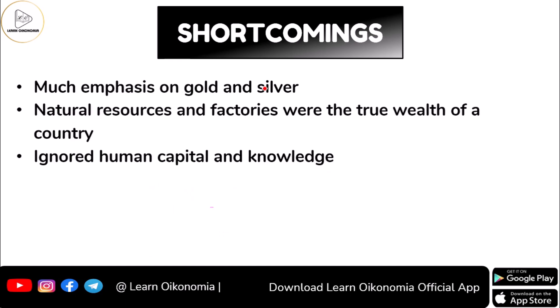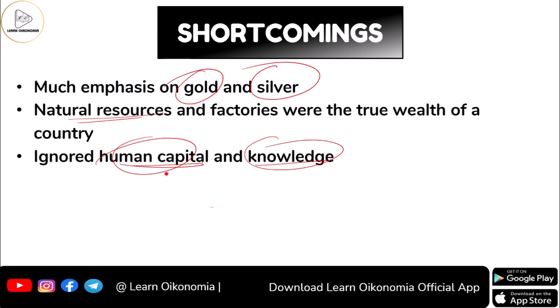As mentioned, supporters of Mercantilism were giving over-emphasis to precious metals like gold and silver. They were not considering the role of natural resources, which actually form the true wealth of nations. When it comes to very important aspects like human capital and knowledge, these were not considered — all were ignored by Mercantilism. But now we can see how human capital plays a crucial role in developing a nation, and the knowledge economy is also playing a very important role — yet these were neglected by Mercantilism.